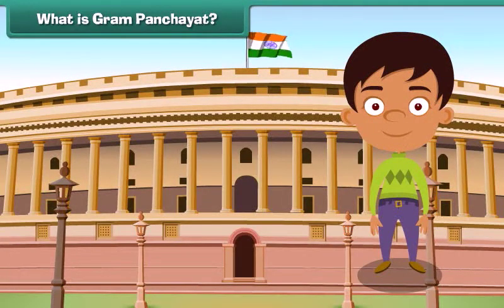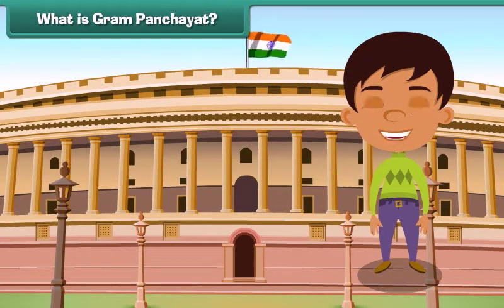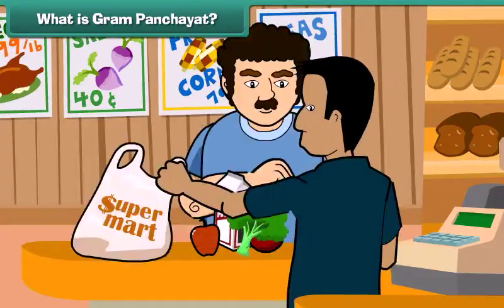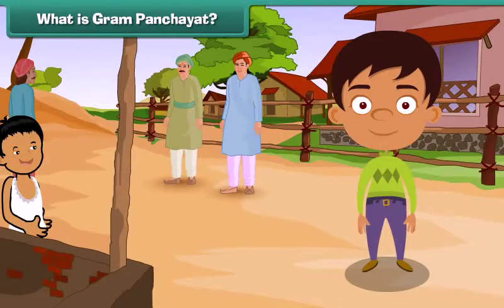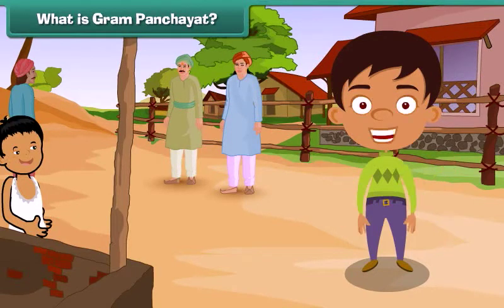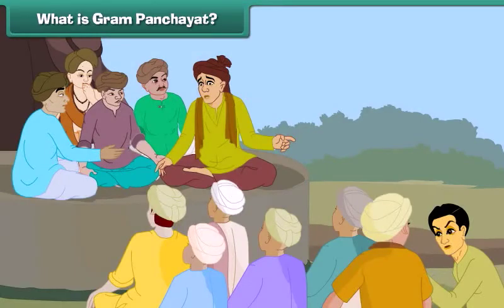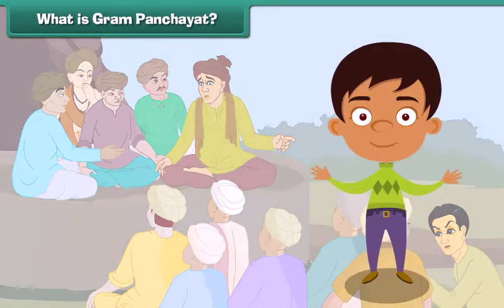What is a gram panchayat? We all know that governments in the states and union territories maintain law and order in their cities and look after the needs of their city dwellers. The question is: who is responsible for keeping law and order in villages and meeting the requirements of villages? The answer is the village local government, known as the village panchayat or gram panchayat, which performs both these functions.